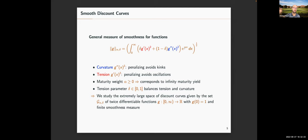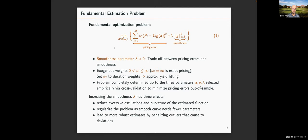We study the extremely large space of discount curves that are twice differentiable and have a finite smoothness measure. The fundamental optimization problem is to find a curve in this large space that minimizes the pricing error subject to a certain degree of smoothness. Smoothness is controlled by a smoothness penalty lambda: increasing lambda gives a smoother curve. We also have exogenous weights; we use inverse duration weights, which means we are essentially minimizing yield errors.